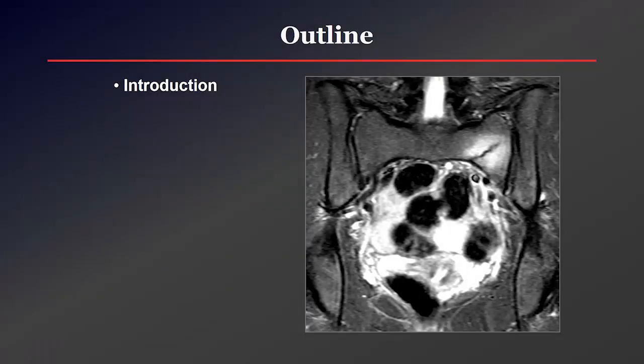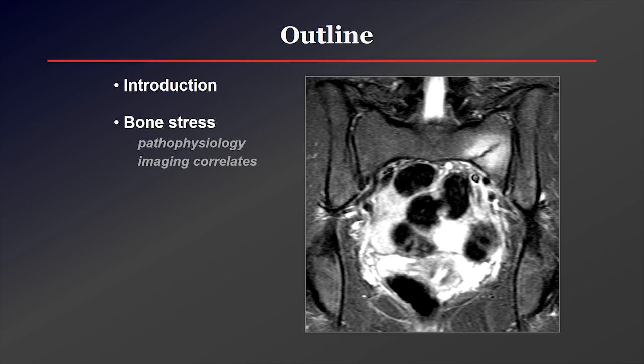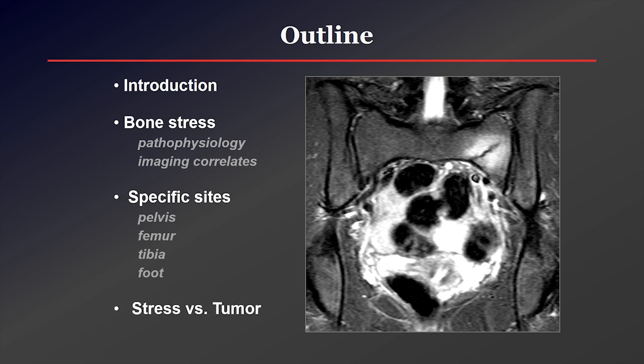I'll give a brief introduction to the topic and then spend a few minutes looking at the pathophysiology of bone stress, as well as what these types of injuries look like on imaging studies. Then we'll look at some specific sites in the pelvis and lower extremity, and finish with just a few words about trying to differentiate a stress injury from tumor, which can be a very difficult but very important differentiation.